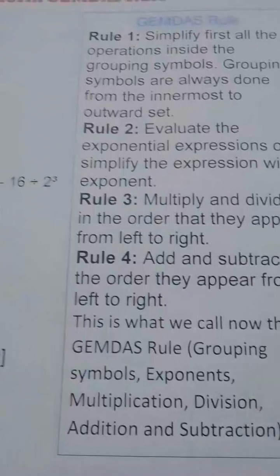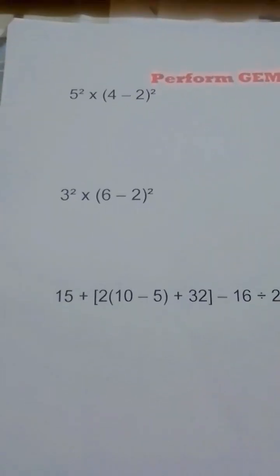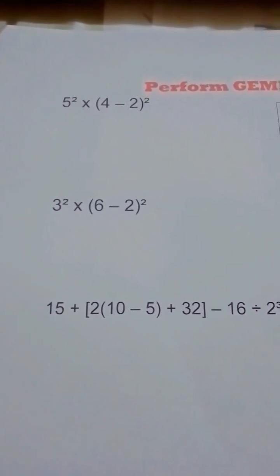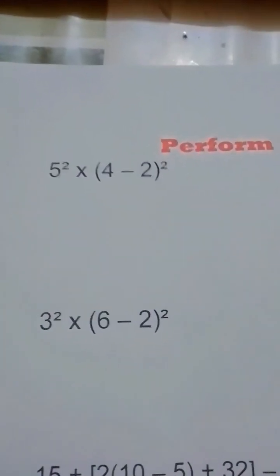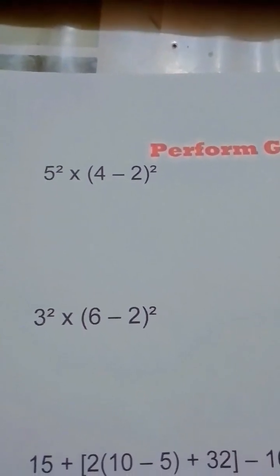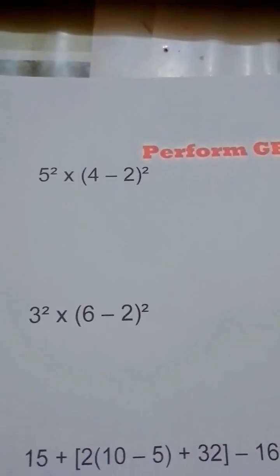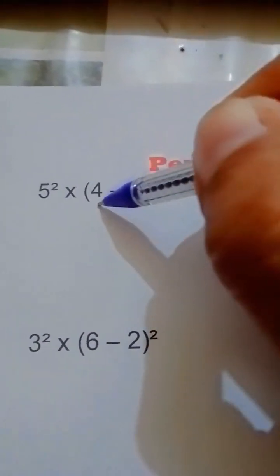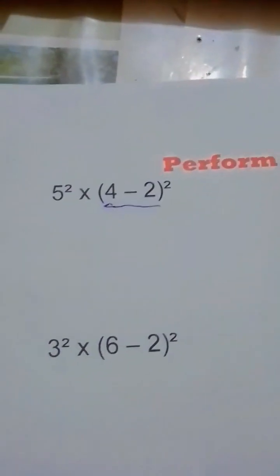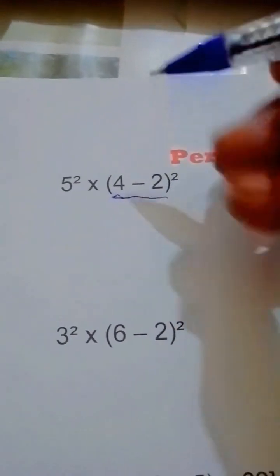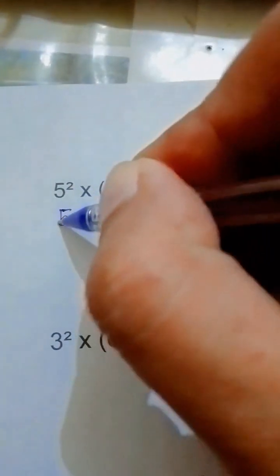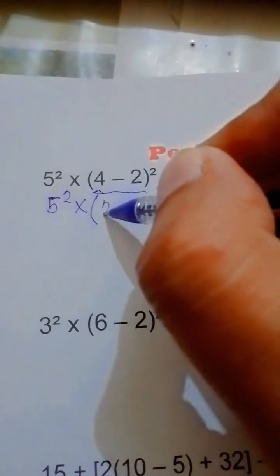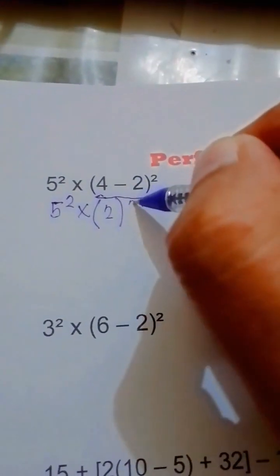Let's start with this one. I have here four examples, the easier one and the harder one. First, 5 to the power of 2 times, open parenthesis, 4 minus 2, close parenthesis, 3 to the power of 2. So first we have to simplify first the innermost inside the parenthesis. So 5 to the power of 2 times, 4 minus 2 equals 2, then copy the exponent 2.